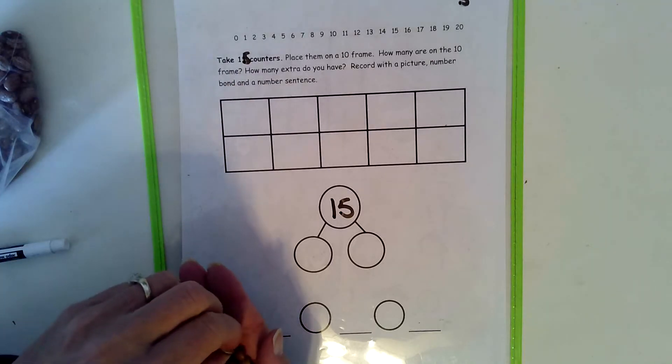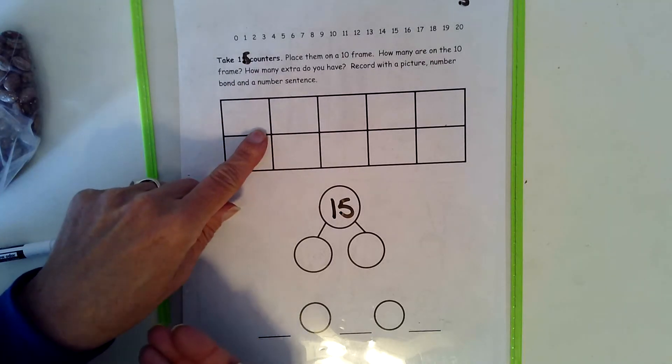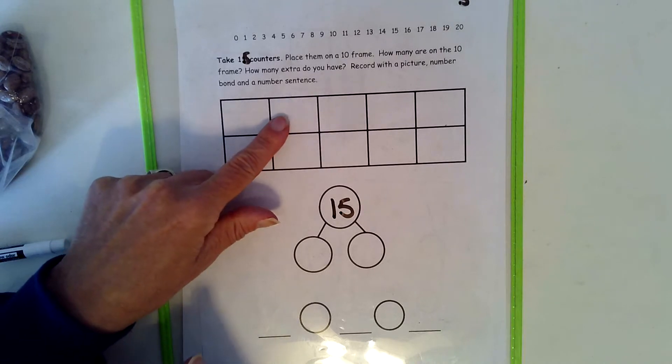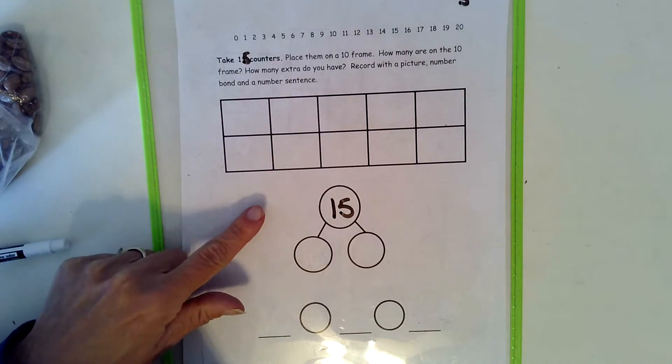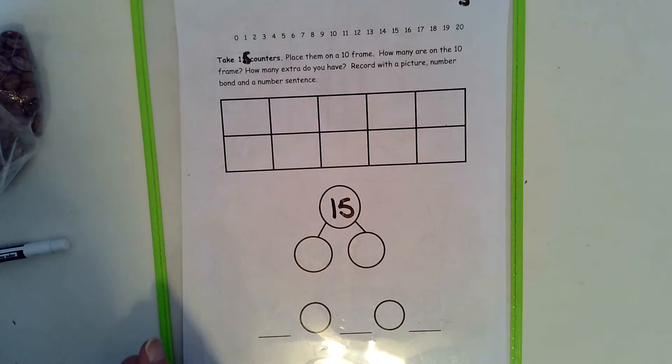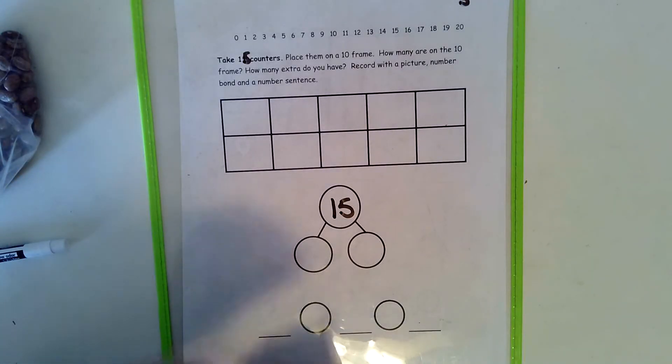So I'm going to take 15 counters and I'm going to put them on the 10 frame. And I'm going to record how many are on the 10 frame and how many extras I have down here. And then we'll write our addition sentence.